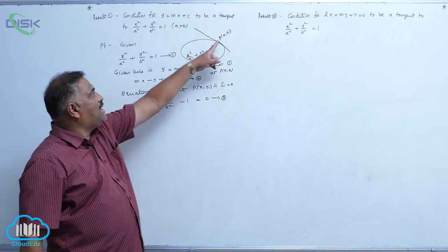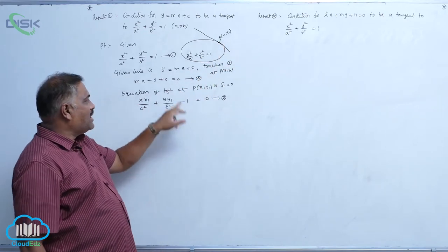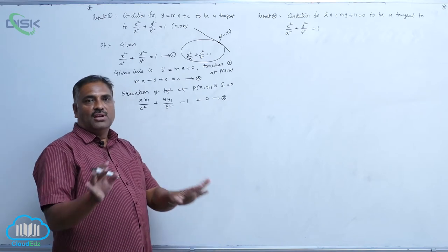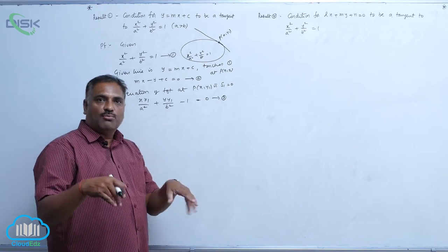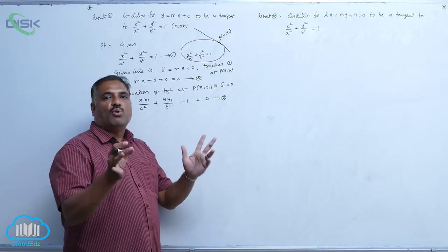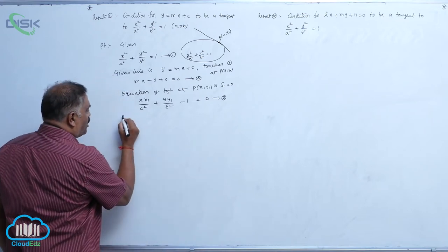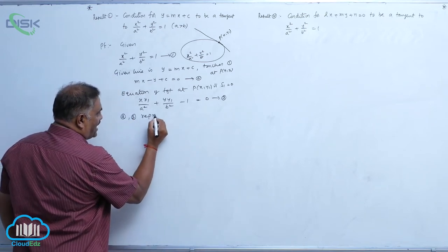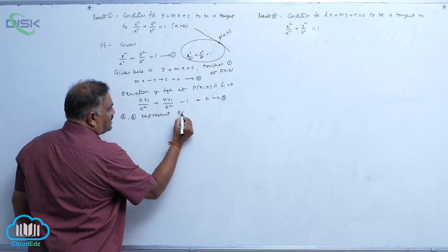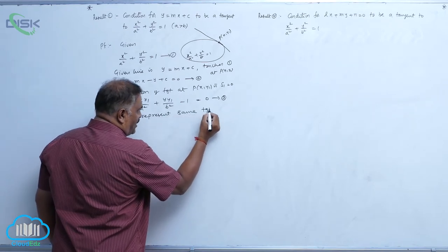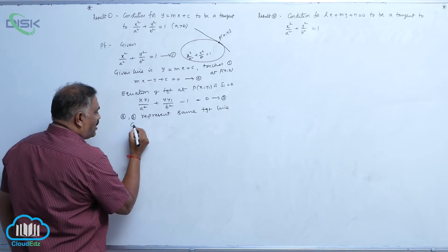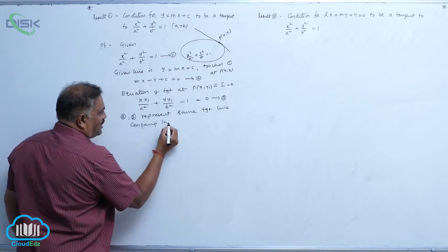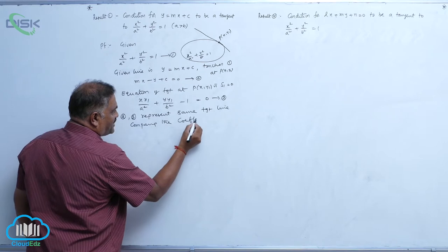At point P(x1, y1), equations 2 and 3 are both tangents. At one point, only one tangent is possible, so if there are more tangents, they must be one and the same. Therefore, equations 2 and 3 represent the same tangent line. So we proceed by comparing the coefficients.